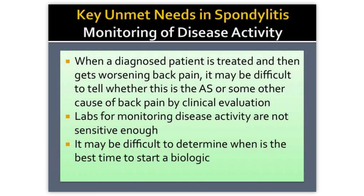We don't really have that many tools to monitor people. We have a lab test called C-reactive protein, or CRP, but this just isn't sensitive enough — about 50% to 60% of people have a normal CRP both at the time of diagnosis and during follow-up. For this reason, it may also be difficult to determine the best time to start a biologic. We want to start a biologic when a patient has active disease, but we also want to be sure that the severity of symptoms is not due to some other problem like a slipped disc. So it's important to have objective tools that confirm active spondylitis.